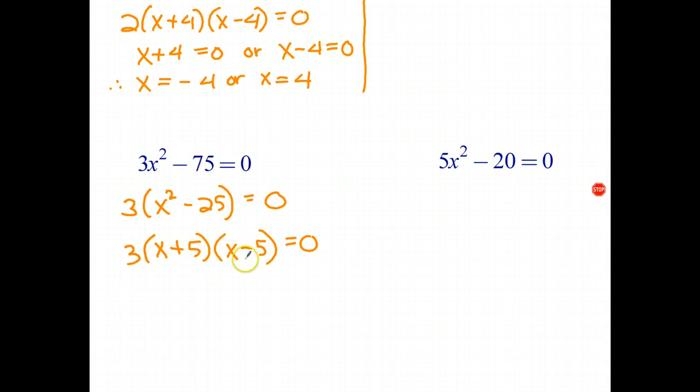And now we can use the null factor law. Well, 3 can't equal 0, but we can say that x plus 5 equals 0 or x take 5 equals 0. And if that's true, x must be negative 5, and to solve that equation, x must equal 5. So again, there's the two solutions to that quadratic equation.